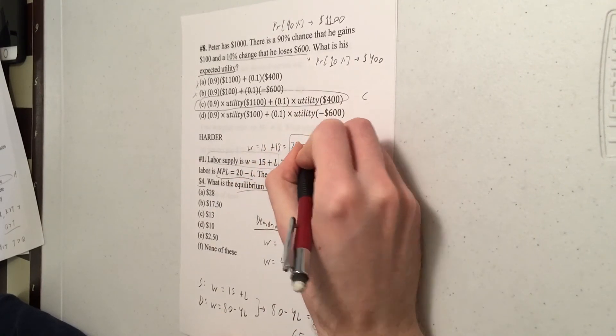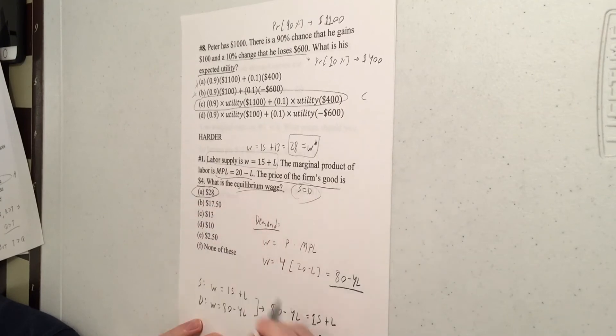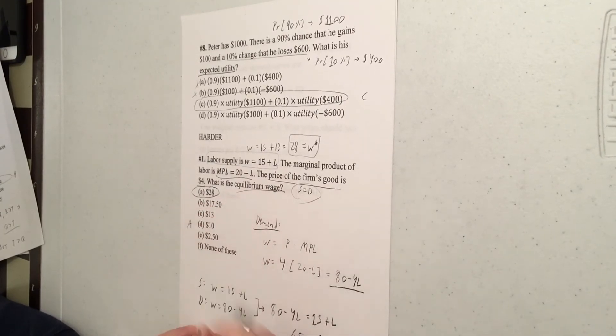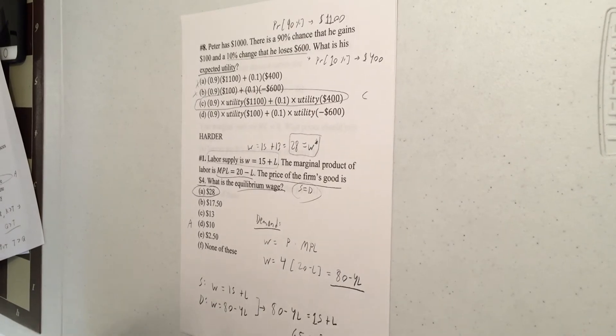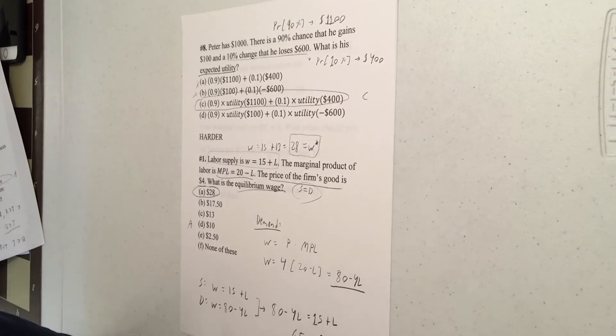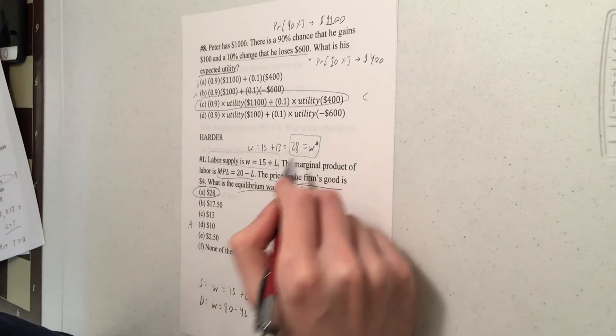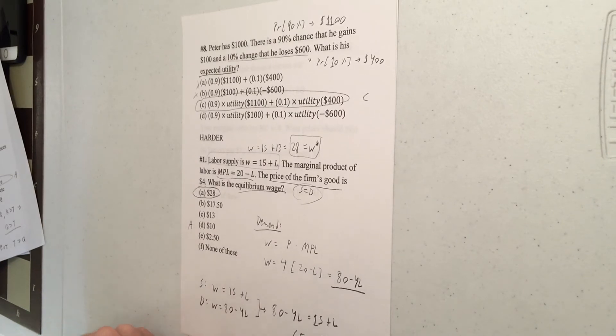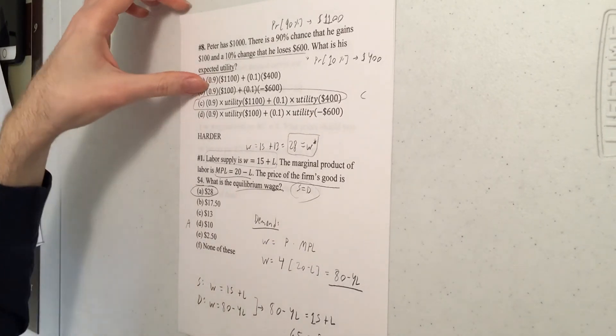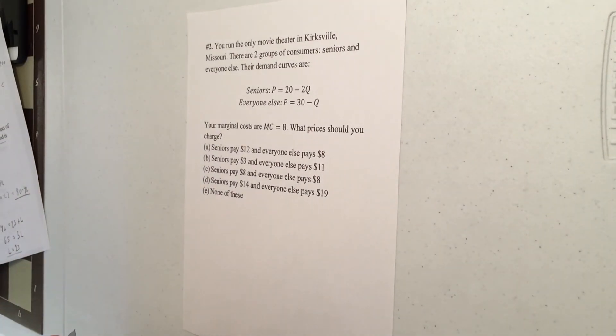So let's just do supply because that looks really easy. Supply is W equals 15 plus L. And we established that L is 13. So that means that the wage is going to be 28. I'll give it a star for equilibrium wage. So looking at our options here that corresponds to option A, $28. So as you can see, in part two, the problems are a little bit harder. You got to do some extra work to first of all derive demand. And once you've got that, you find labor. And only at the end do you find wage. So more work than you had in the earlier section with the easier problems.